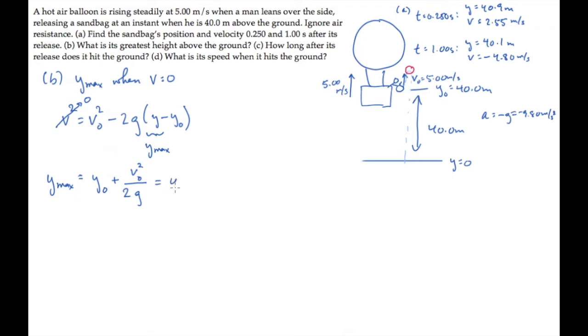We can substitute the numbers into this equation now. The maximum height is 40 meters plus the initial velocity squared divided by 2g. When you calculate, you find that it's 41.3 meters. So the sandbag rises a little bit after being released before it starts to fall again.